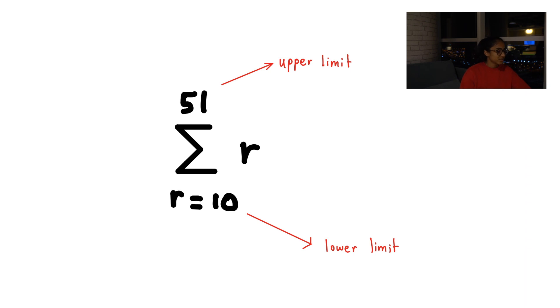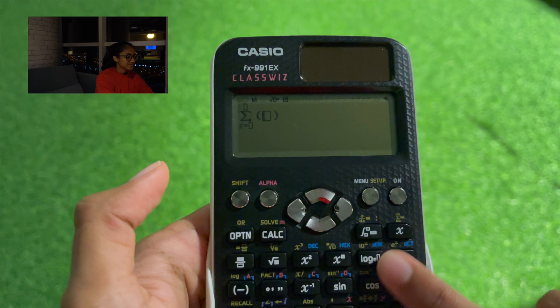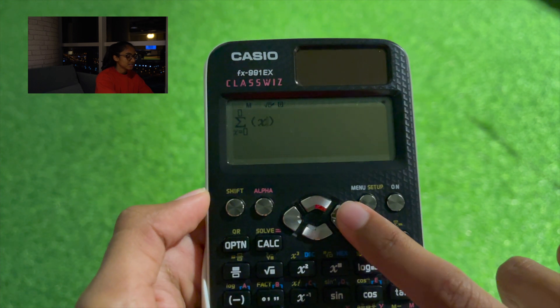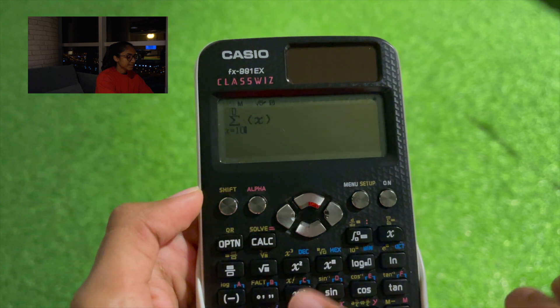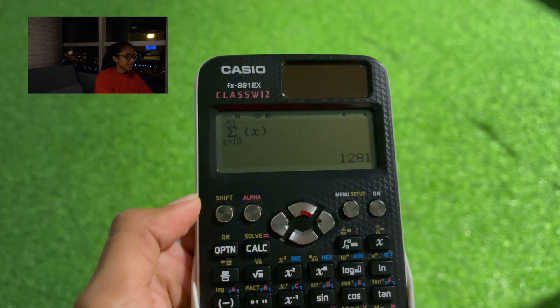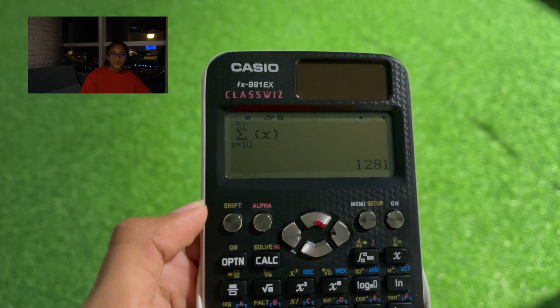So in this one, starting value we know is 10. Okay, well first we have to type in our function, which will just be X. The starting value is 10, and the ending value is 51. So now we just press the equal sign to get our answer, 1,281.